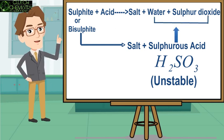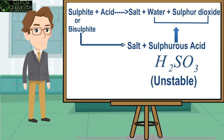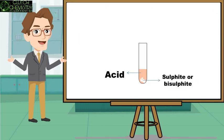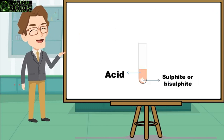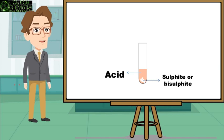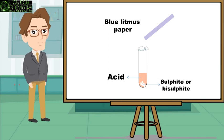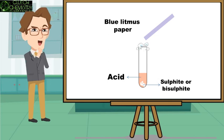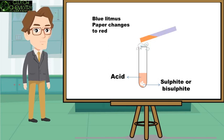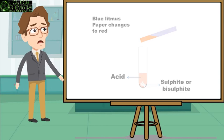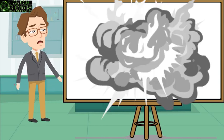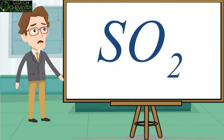To detect the presence of sulfur dioxide, if we take a test tube, it will change the color of litmus paper from blue to red. This indicates the nature of sulfur dioxide — sulfur dioxide is acidic in nature. The gas that evolves is sulfur dioxide.